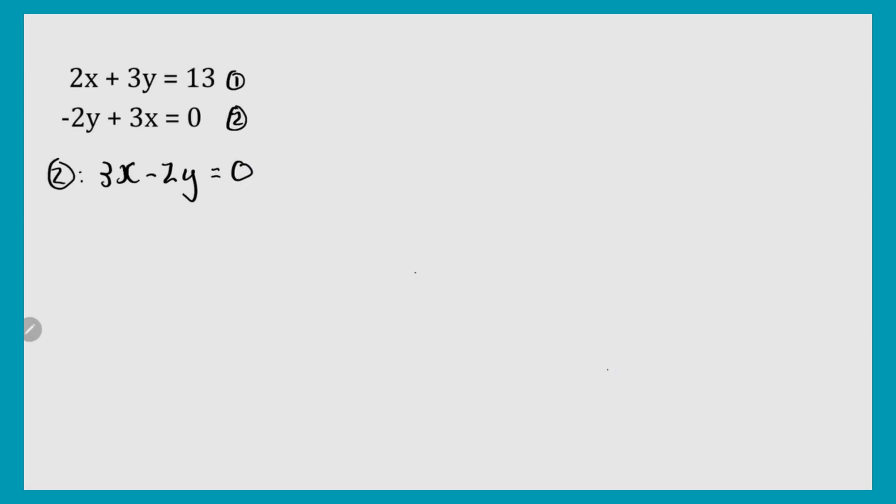Now you can look at your first equation and see you have 2x; your second equation has 3x. You have 3y in the first equation and negative 2y in the second. So now you can choose which variable you want to eliminate — the x or the y. Let's say you want to eliminate the x. You need to make the x's the same, so you find the lowest common multiple of 3 and 2, which is 6.